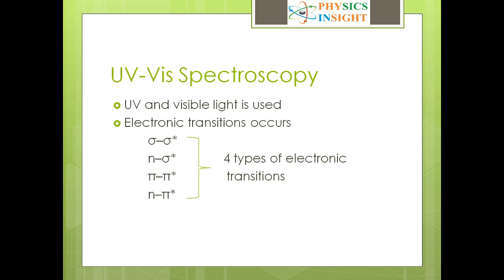There are four types of electronic transitions: sigma to sigma star, n to sigma star, pi to pi star, and n to pi star. Here sigma, n, and pi are bonding molecular orbitals, and sigma star and pi star are anti-bonding molecular orbitals.